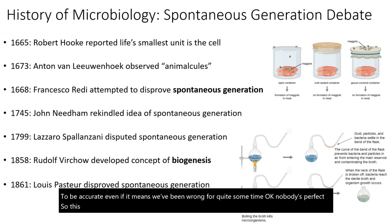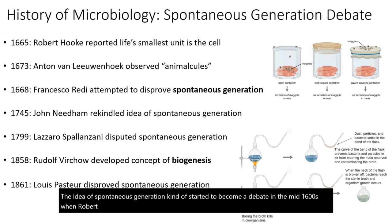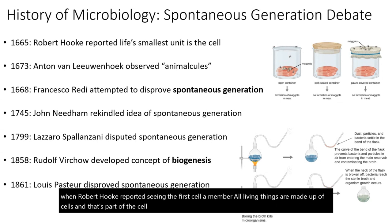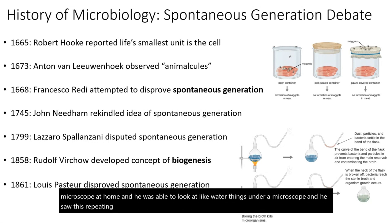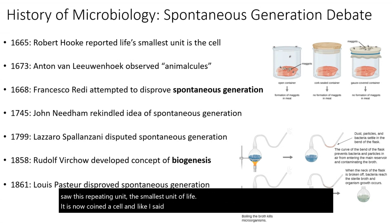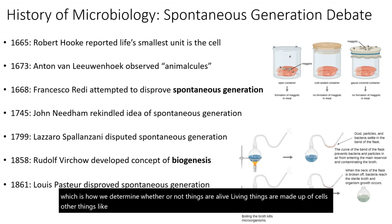The spontaneous generation debate really started to become a debate in the mid-1600s when Robert Hooke reported seeing the first cell. Remember, all living things are made up of cells — that's part of the cell theory. Robert Hooke made his own makeshift microscope at home and looked at water samples. He saw this repeating unit, the smallest unit of life, now coined a cell. That eventually led to the development of cell theory, which is how we determine whether or not things are alive.